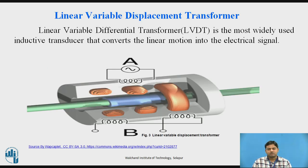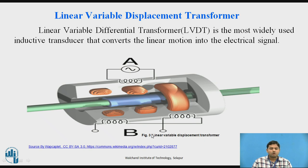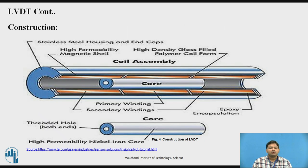Next is the Linear Variable Differential Transducer, also called LVDT. It is a type of transducer that converts linear displacement into an equivalent electrical output — that is, voltage. The conceptual image of the LVDT shows one primary coil and two secondary coils. The main source is connected to the primary coil and the output signal is detected at the secondary coils. There are three coils in the Linear Variable Differential Transducer.